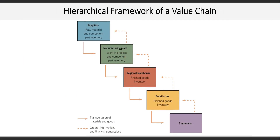The third framework is a simple hierarchical view, which follows the physical flows and transportation of materials and goods downwards from suppliers through manufacturing, distribution, and retail ultimately to the customer, with orders, information, and final transactions moving up through the chain.